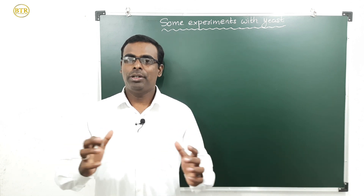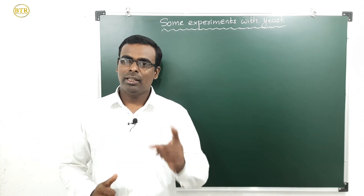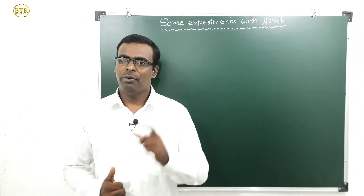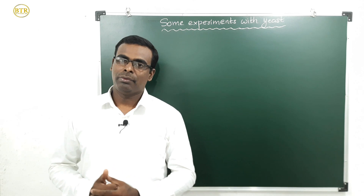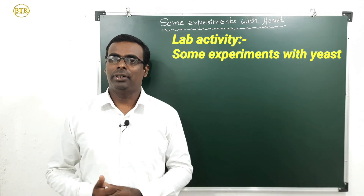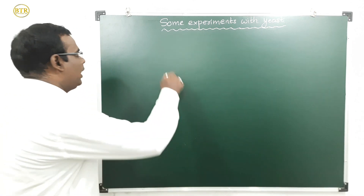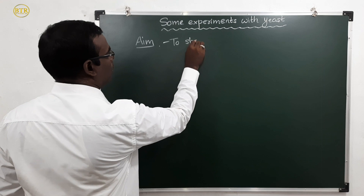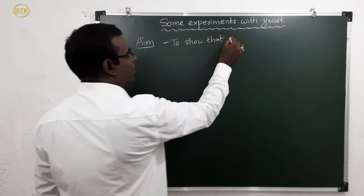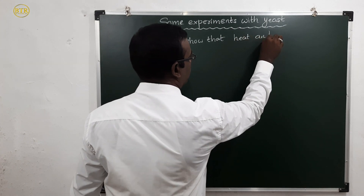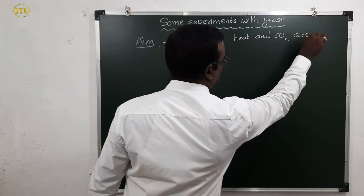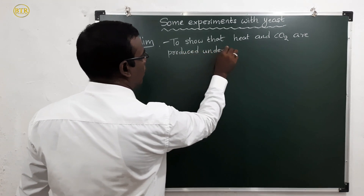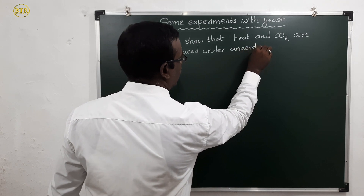Hi children, today we are going to discuss about the lab activity. This lab activity belongs to chapter 2 — Respiration. It is a very important lab activity. We are going to do this lab activity with the help of yeast. The aim of this lab activity is to show that heat and carbon dioxide are produced under anaerobic respiration.